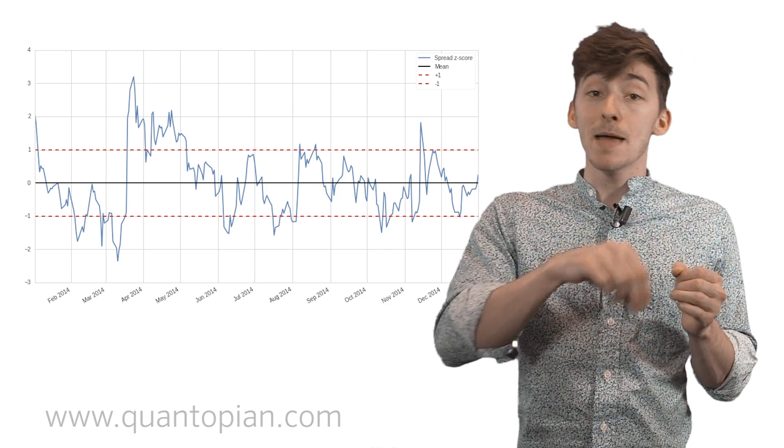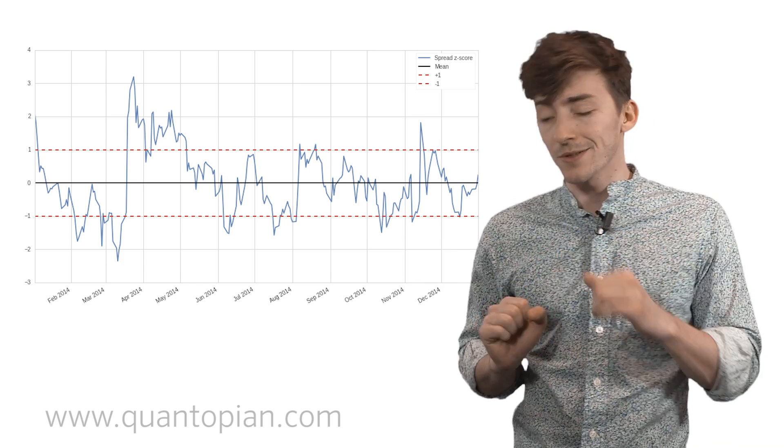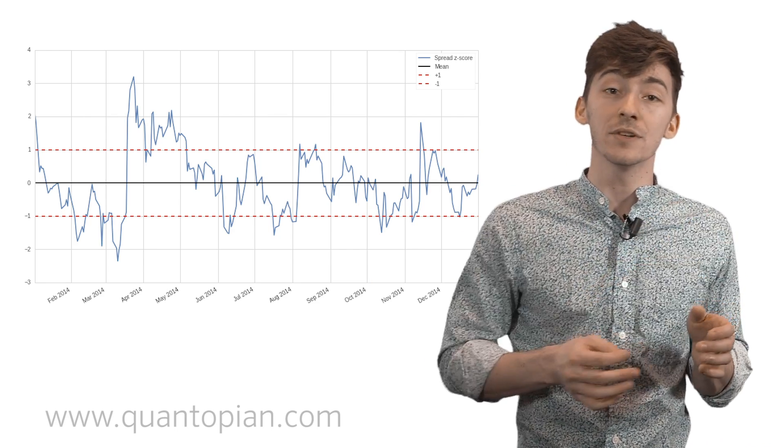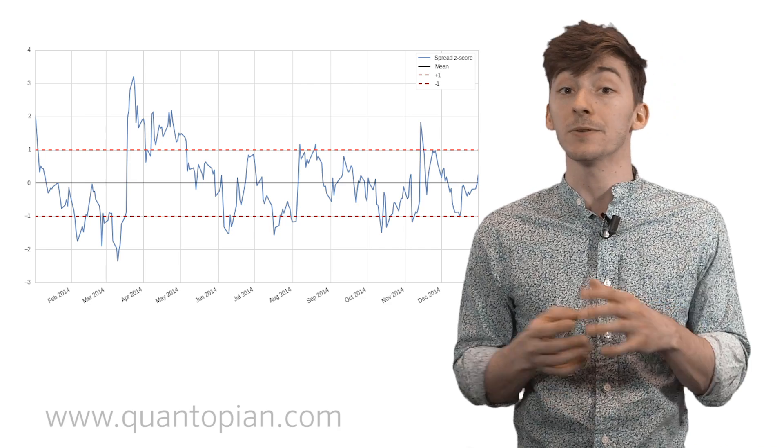Ideally, we want many, many different pairs trades constructed in the same way, so that if one relationship breaks or another relationship breaks, we still have a portfolio of other relationships that will help prevent us from putting too much on any individual set of bets. And that's just basic portfolio diversification.